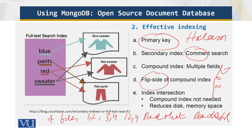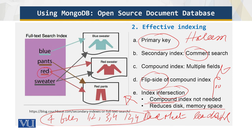The solution is index intersection, which does not require a compound index and reduces disk and memory space. For example, you can have one index for color — say red or blue — and another for product, and use an intersection of these indices to get what you're looking for with reduced disk space. That is the advantage of index intersection in MongoDB.